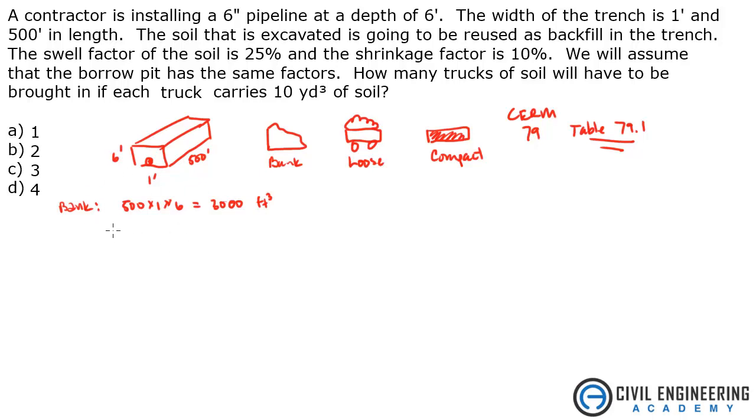And then we got a pipe in there. So let's figure that out. That's pi over four times the diameter which is half a foot squared multiplied by 500 foot in length. And what does that give me? That gives me 98 cubic feet.